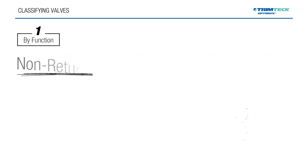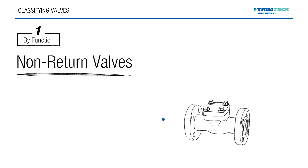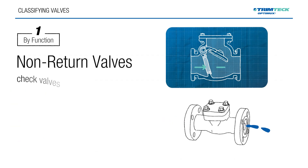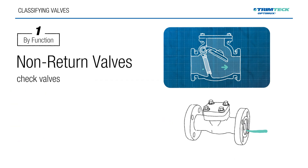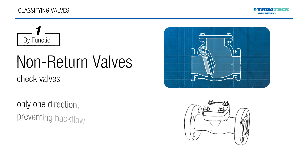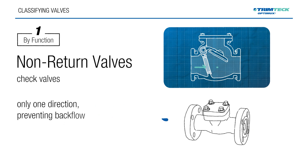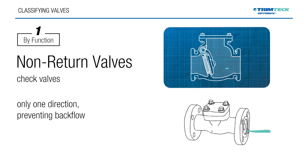Non-return valves, also called check valves, allow fluid to flow in only one direction, preventing backflow that could damage equipment or disrupt a process.